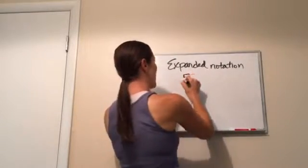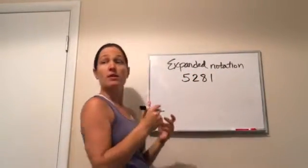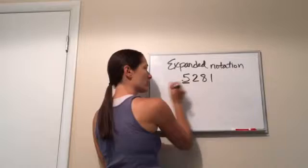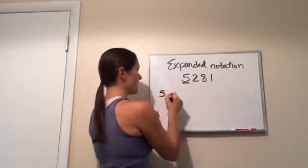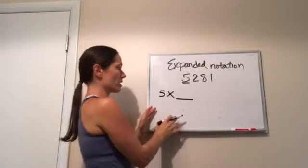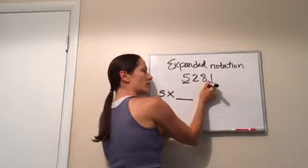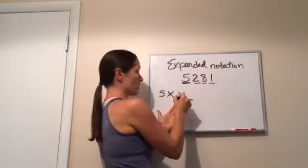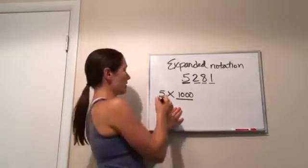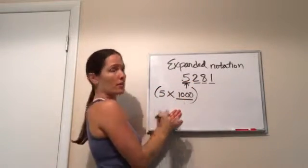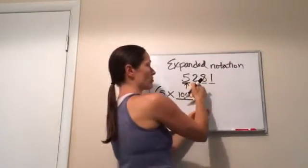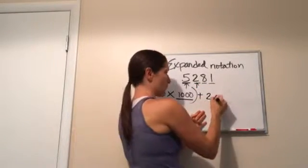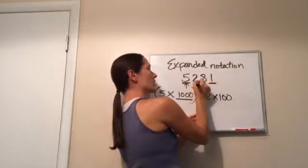If I was to write 5,281 in expanded notation, what you're going to do is do this. You're going to take your first number, five, and you're going to multiply by its place value. Place value. So this is in the ones, tens, hundreds, thousand. So guess what I'm going to do? Five times thousand. That's expanding that number right there. Now plus, we want to also do the two. So what would my two one be? Two. Hundred. Times one hundred, because this is ones, tens, hundred. Very good.